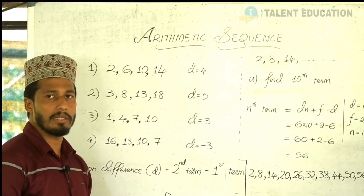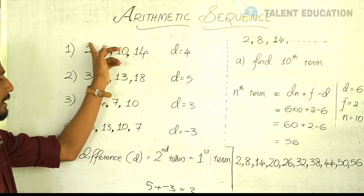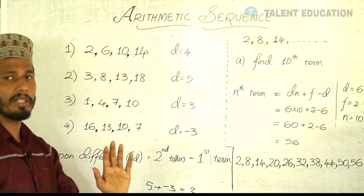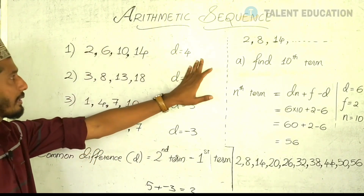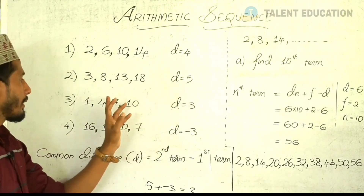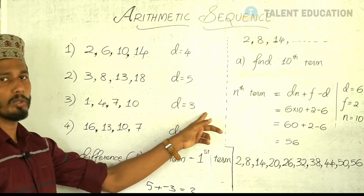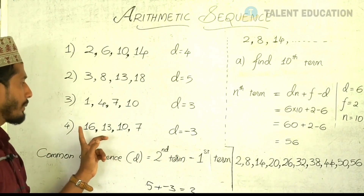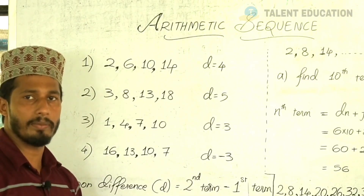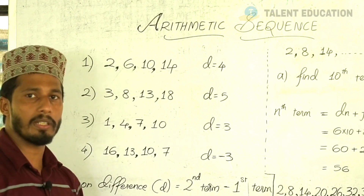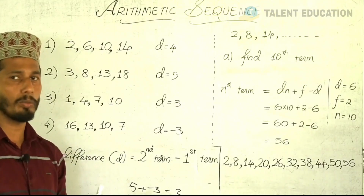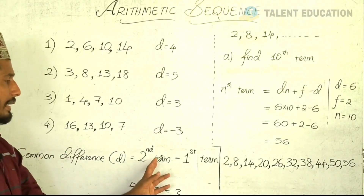The second term is minus first term. The common difference is second term minus first term. Here the number is equal to 4, where if we add, not to 4 equal to minus 4. The common difference is second time minus first time.